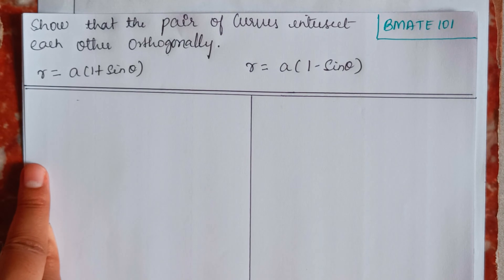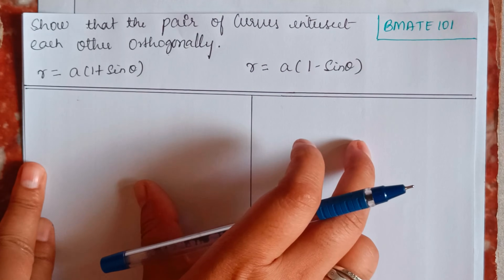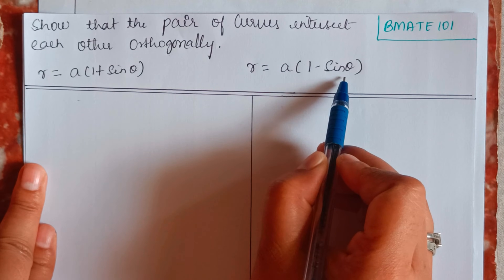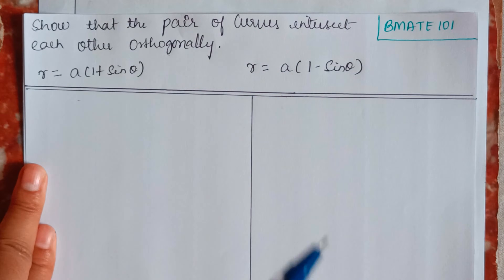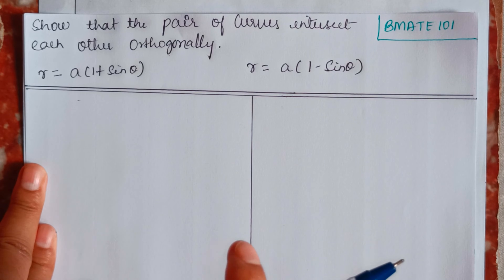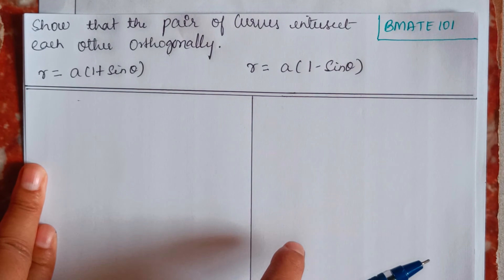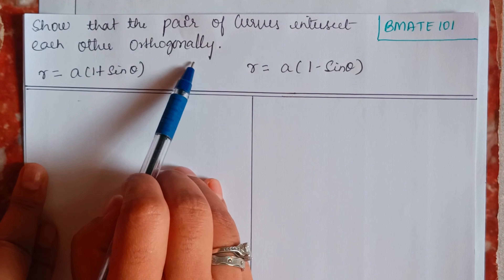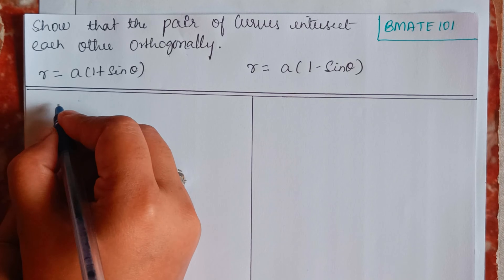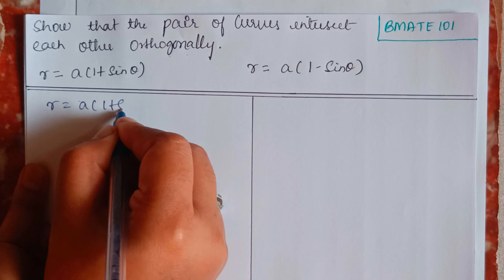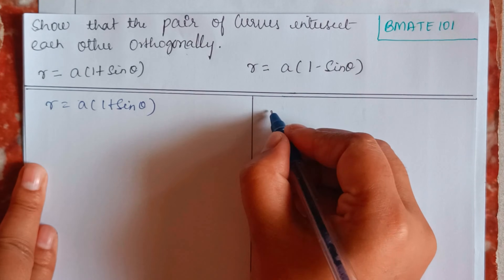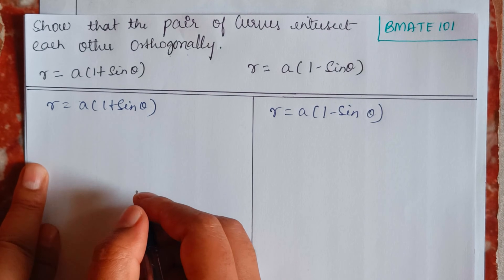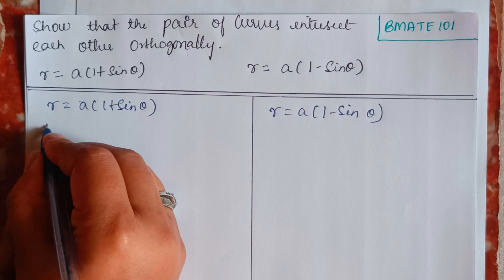The curves are r = a(1 + sinθ) and r = a(1 − sinθ). For this question, I will find φ₁ for the first curve and φ₂ for the second curve, and then I will find the difference between those two. The difference should be equal to π/2, because orthogonally means the difference must be 90 degrees.